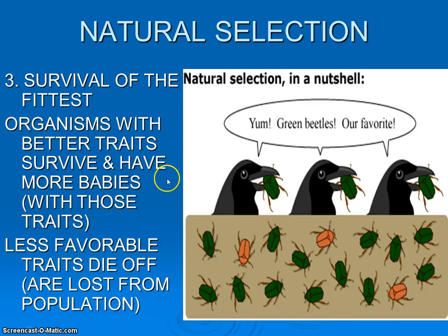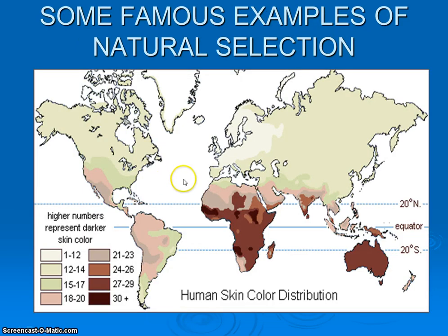Now I just want to take a second to look at some examples of natural selection, because often times we'll hear arguments from individuals that don't, quote unquote, believe in evolution. They try to attack the theory of natural selection and state that it's an okay idea, but there's no evidence for it happening and we can't find examples of it.